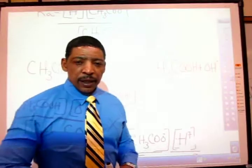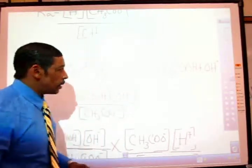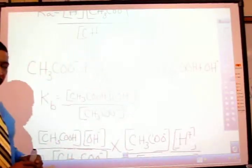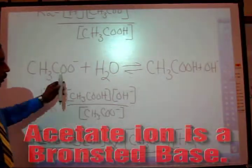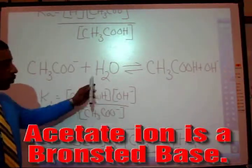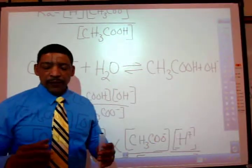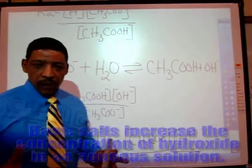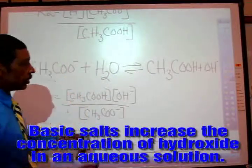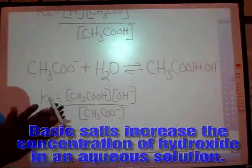The conjugate base of acetic acid is the acetate anion. When acetate anion dissolves in water as a result of the dissolution or the dissolving of a basic salt, in this case, the salt could have been sodium acetate.